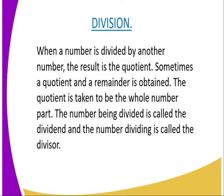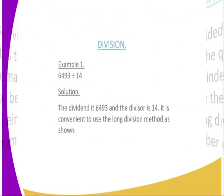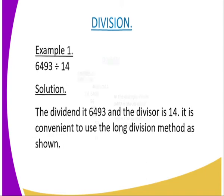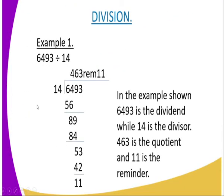We are going to get the division, and then we see when a number is divided by another number, the result is a quotient. Sometimes a quotient and a remainder is obtained. A quotient is taken to be the whole number. The number being divided is called the dividend, and the number dividing is called the divisor. Let us divide something like 6,493 divided by 14. Here the dividend is 6,493, and the divisor is 14. It is convenient to use the long division method as shown. When we divide this one, 463 is the quotient, and 11 is the remainder.